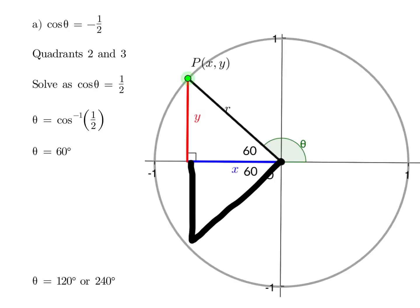When cos equals negative one-half, pick your two quadrants where cos is negative, so that's quadrants 2 and 3. Solve it as a positive, so cos theta equals one-half. Then you do shift cos, or cos inverse of one-half, and that gets you the 60 degrees that you put in the triangles.